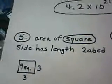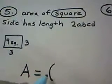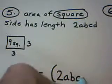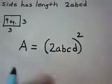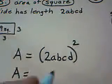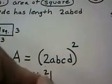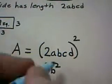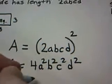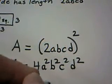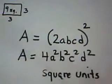To find the area, which we'll call A, you take the length of one of the sides, which is 2abcd, and you square it. You raise it to the second power. So when you square everything in here, you get 4a squared, b squared, c squared, d squared, and you should always give the correct units for your answer. This would be square units. For example, square feet, square inches, square miles.